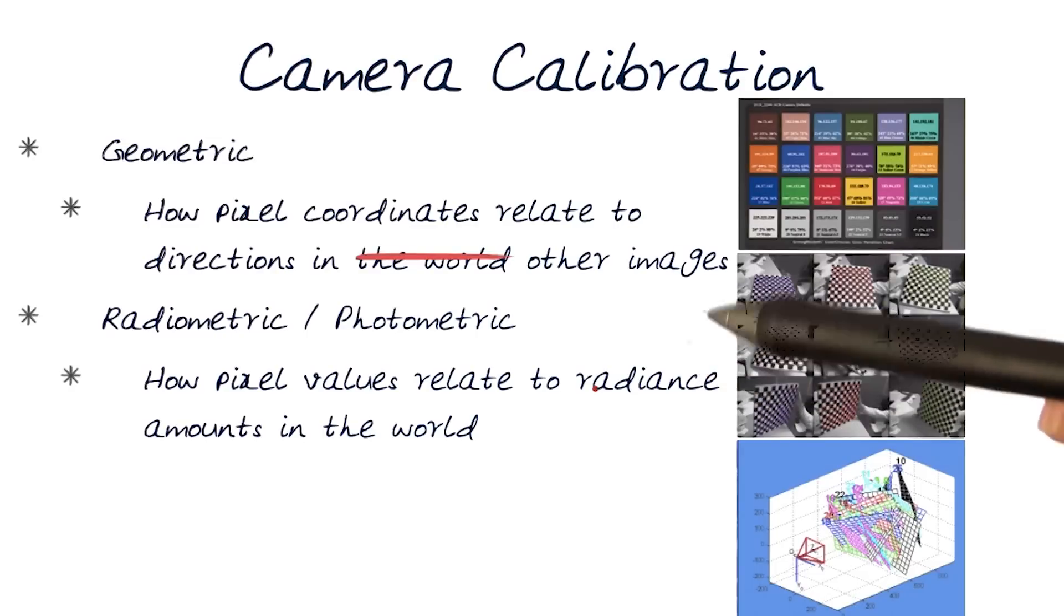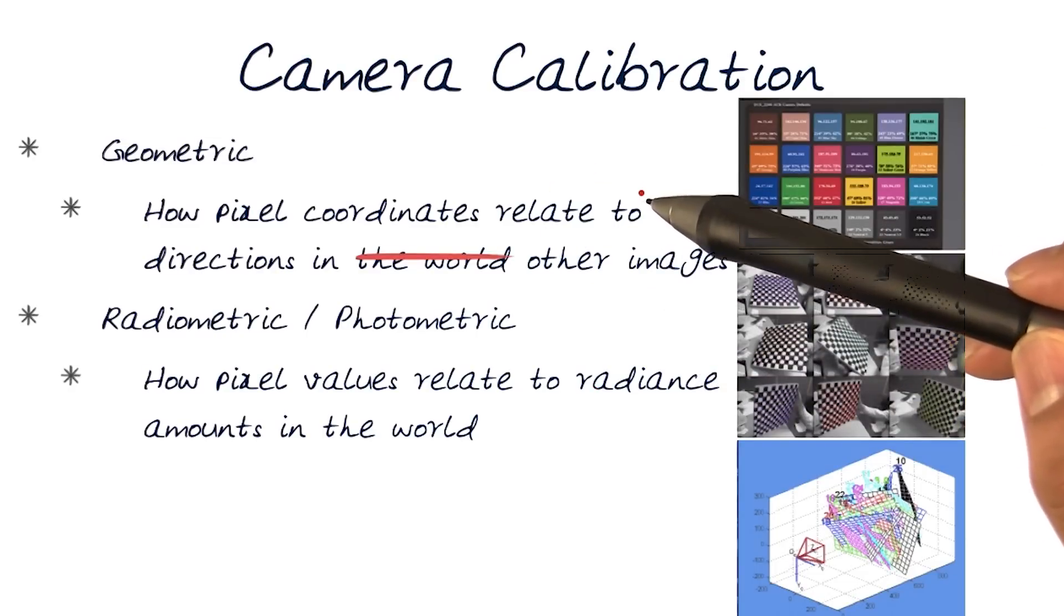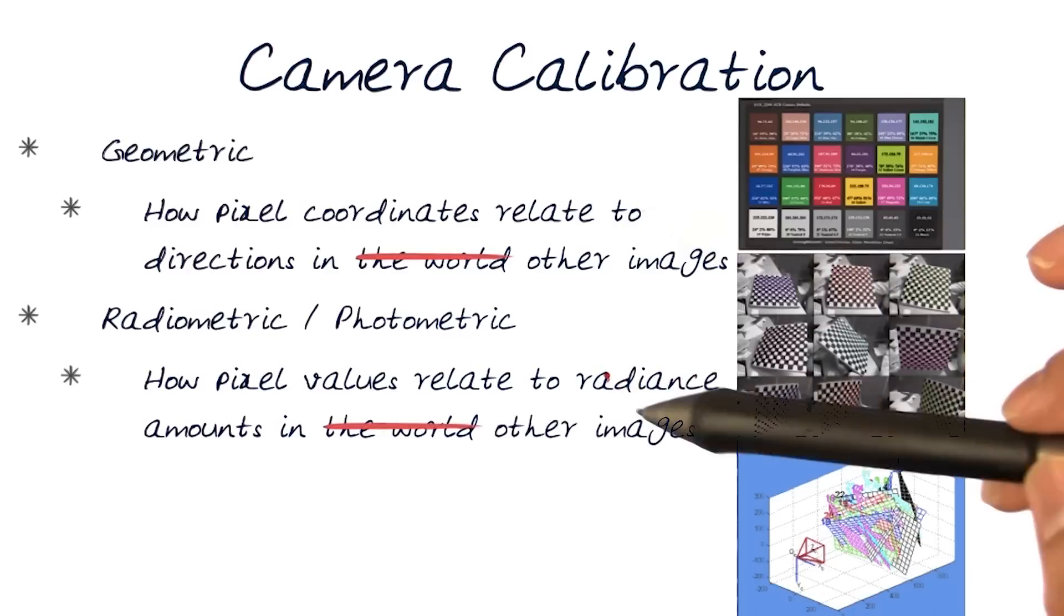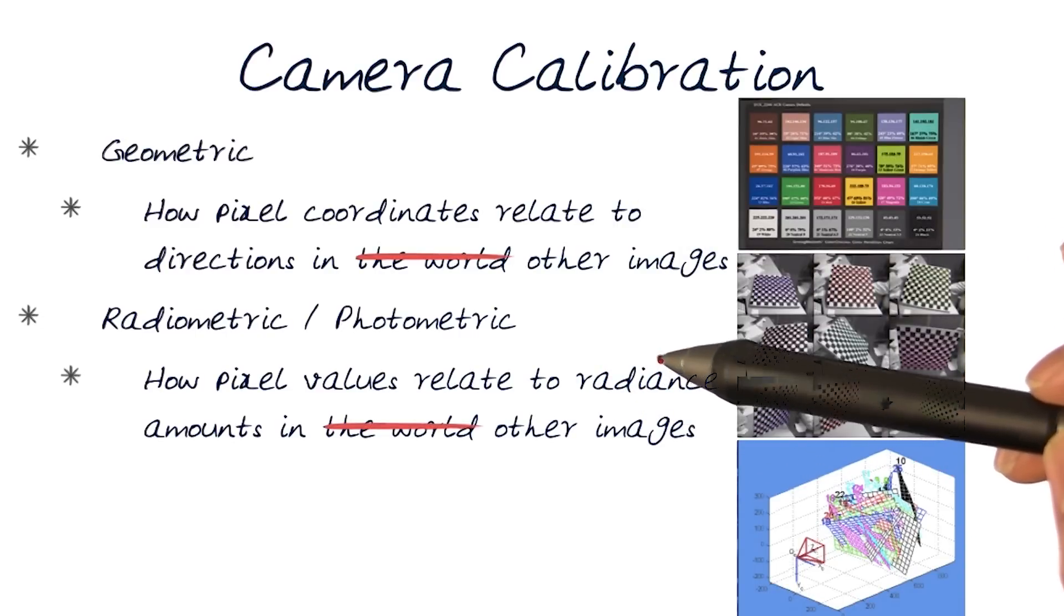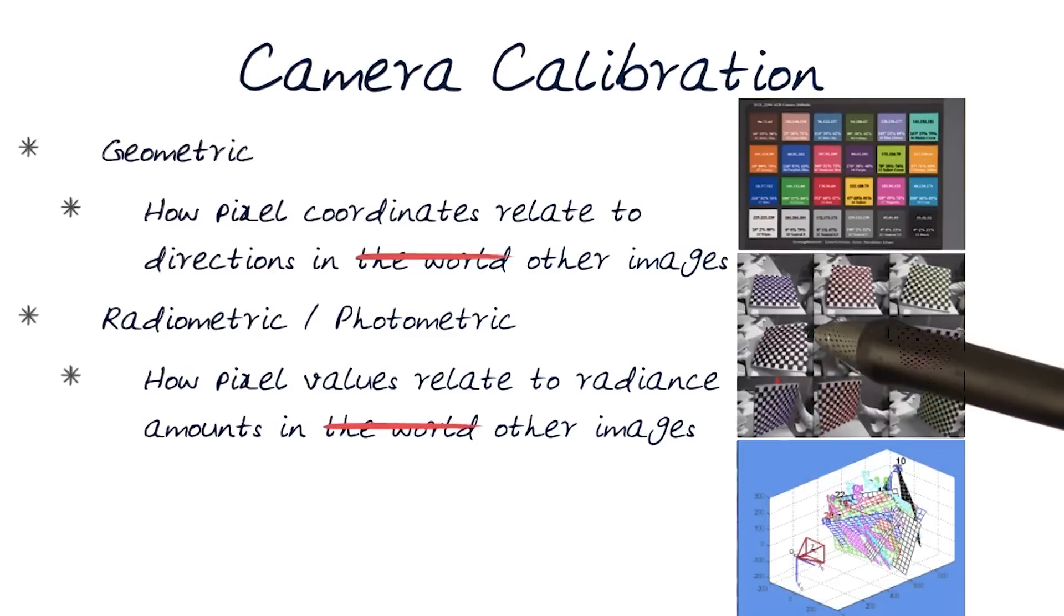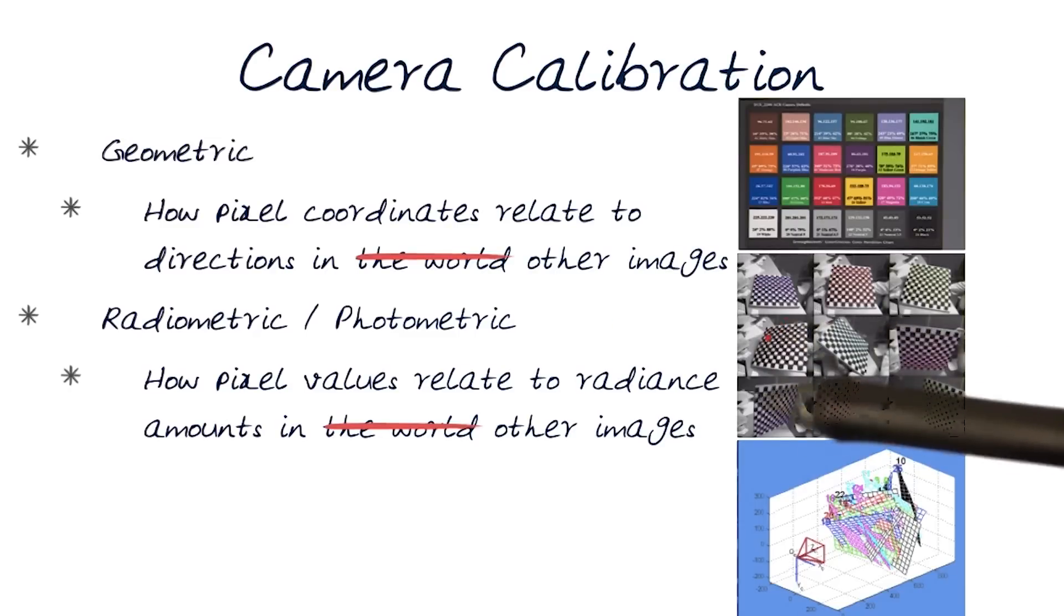The same thing is true in the case of photometric calibration. This was relevant when we looked at panoramas. This is more relevant in the world of HDR, where we're trying to relate how the radiance at any point on the scene accounts for a specific pixel intensity.